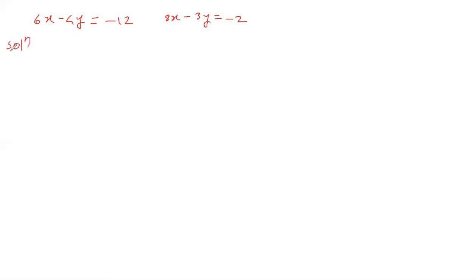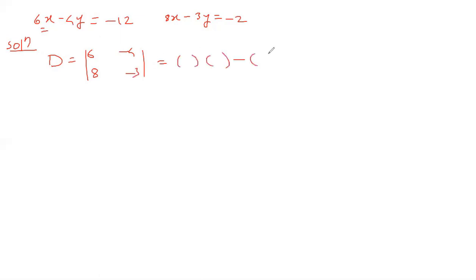In solution, we find the value of D first. Coefficient of x is 6, coefficient of y is minus 4, coefficient of x is 8, coefficient of y is minus 3. Cross multiplying and subtracting: 6 times minus 3 is minus 18, minus minus plus gives 8 times 4 which is 32. So minus 18 plus 32 equals 14.